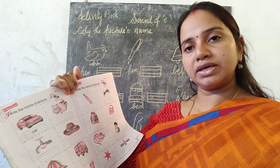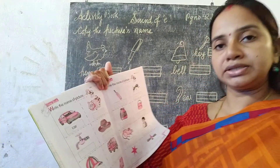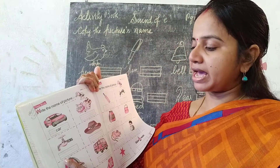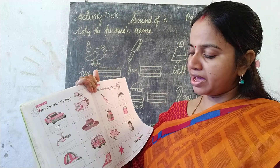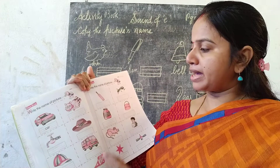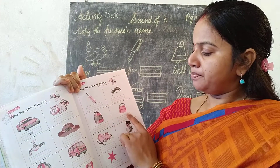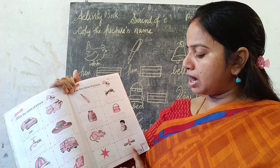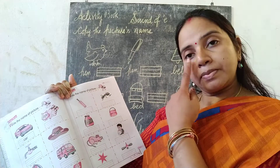We have done it in the previous class. So what are the things we have seen? Car, Cat, Tap, Hat, Cap, Van, Map, Mat, Bat, Ant, Gem, Bag, Rat, Man, Star — and your own vowels.